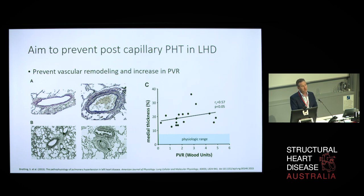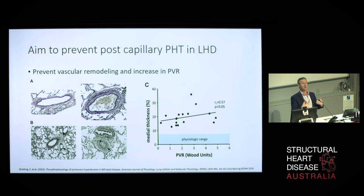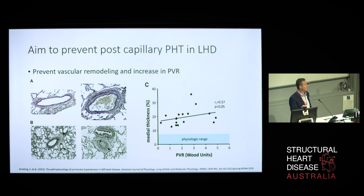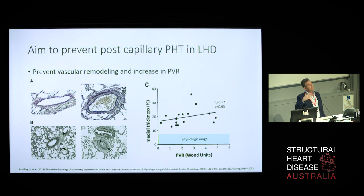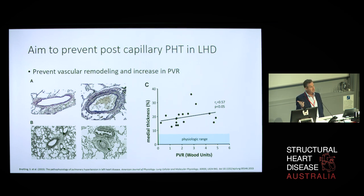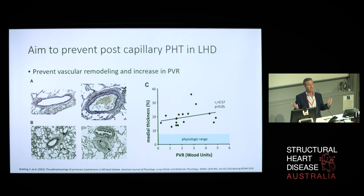Just a word on echo. If you're doing an echo and you find a TR jet of 3.0 or 4.0 or 5.0 — a TR jet that you think is abnormal — 95 times out of 100 this is going to be left heart disease, but you really have to make sure you don't miss the one that's idiopathic or the one that's got an ASD. Greg Scalier invented a clever ratio called EPLAR, for which you need the TR jet and the E to E-prime ratio. But another, simpler at-a-glance thing is the LA volume. If the LA is big, it's left heart disease. If the index is over 35, it's left heart disease.